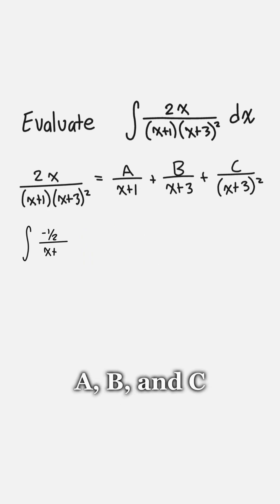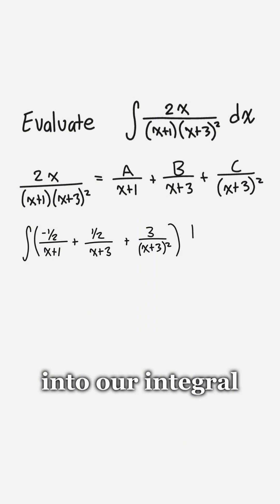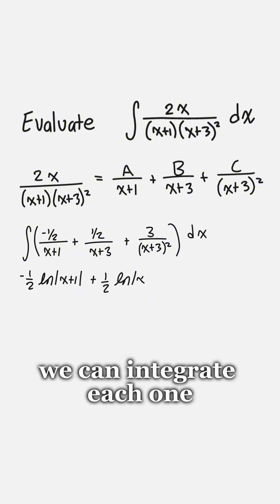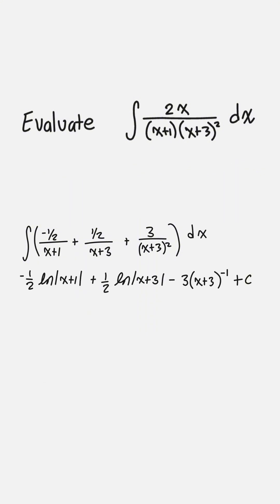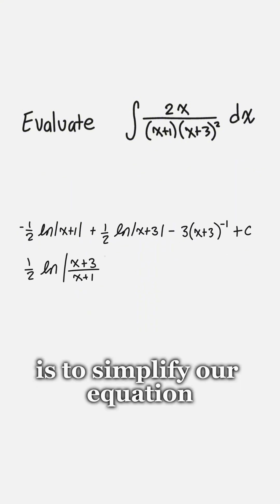Now we've got a, b, and c, so we can substitute those back into our integral. We can integrate each one of those terms individually, and our last step is to simplify our equation.